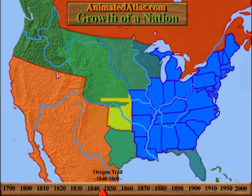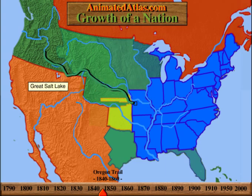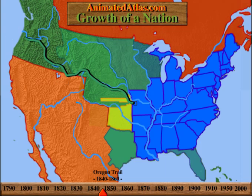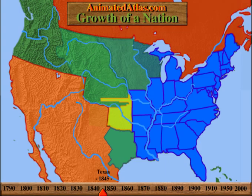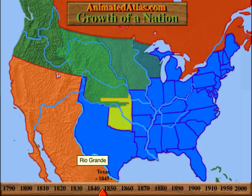The settlement of the west began in earnest in the 1840s. Many people followed the Oregon Trail, which ran across the Great Plains along the Platte River, past the Great Salt Lake in the Rockies, and ending in Oregon on the Pacific Coast. Florida was admitted as a slave state in 1845, as was Texas, including all the land north of the Rio Grande River claimed by Texas.